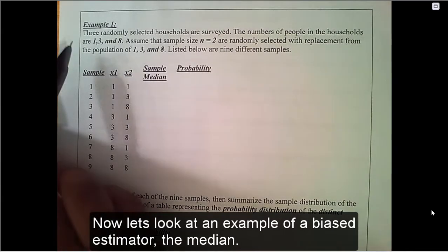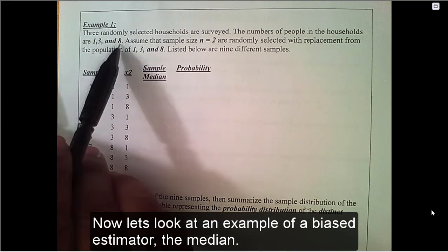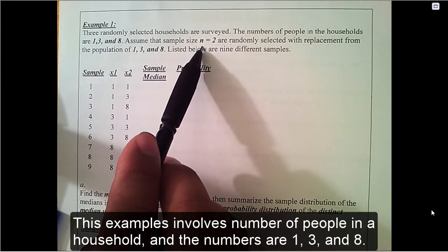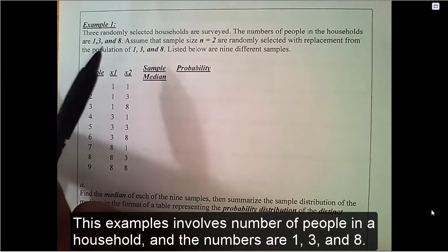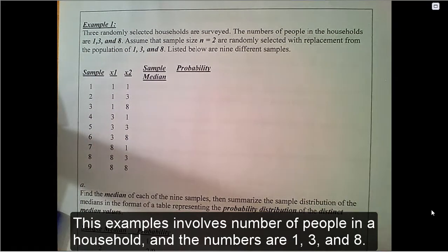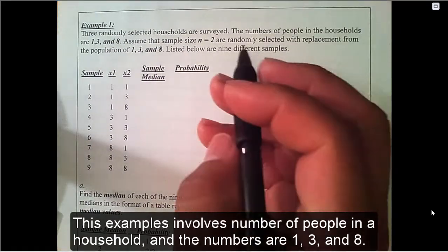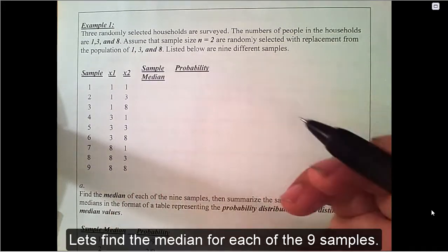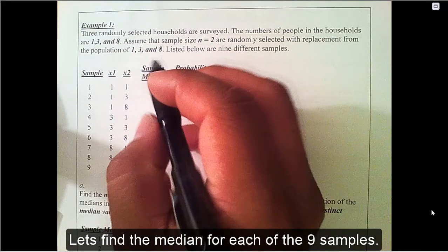Now, let's look at an example of a biased estimator, the median. This example involves the number of people in a household, and the numbers are 1, 3, and 8. Let's find the median for each of the 9 samples.